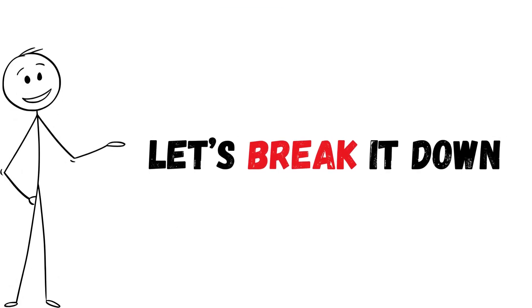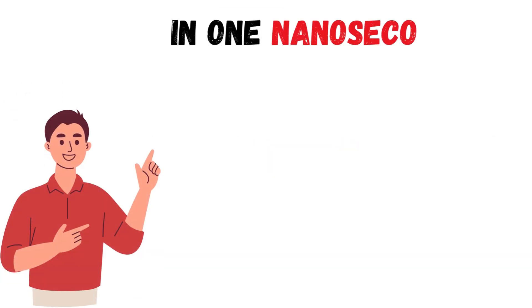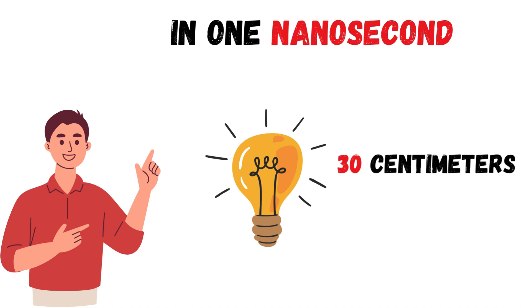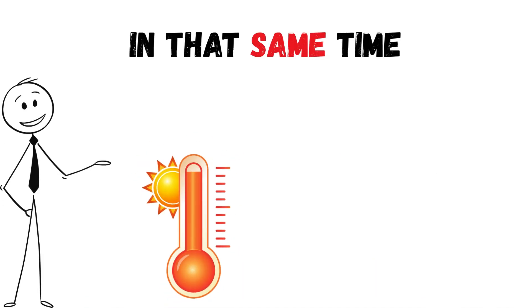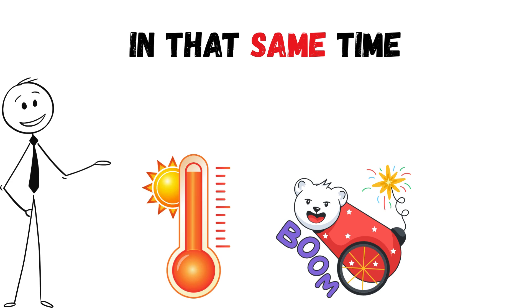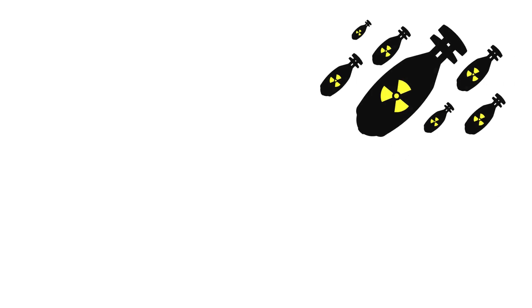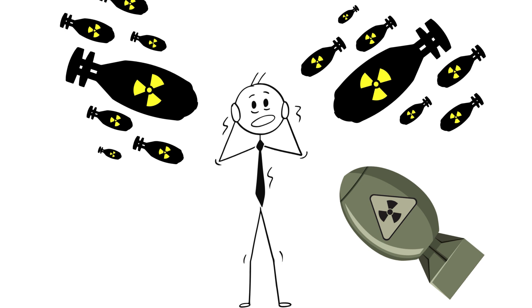Now let's break it down. In one nanosecond, light travels about 30 centimeters. That's roughly the length of a ruler. In that same time, the sun's heat would bombard you with billions of joules of energy. Imagine every nuclear bomb on Earth but aimed directly at your face. Your body would turn into plasma.